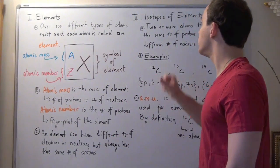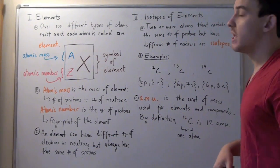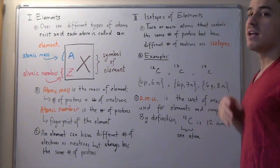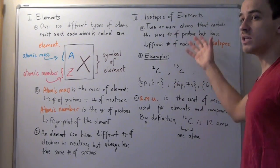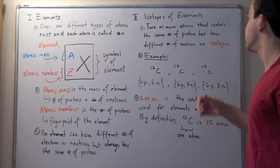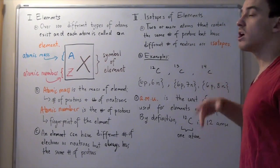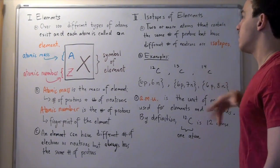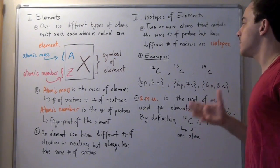Let's go into something called isotopes of elements. Two or more atoms that contain the same number of protons, meaning they're the same element, but have different number of neutrons, are called isotopes of that same element. Let's look at a very common example of carbon.